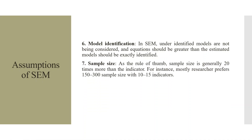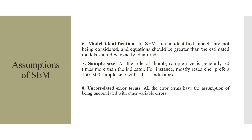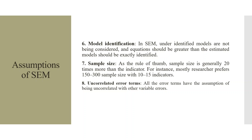Sample size: as a rule of thumb, sample size is generally 20 times the number of indicators. Most researchers prefer 150 to 300 sample size with 10 to 15 indicators. Errors should be uncorrelated — all error terms are assumed to be uncorrelated with other variable errors. SEM uses interval data sets.